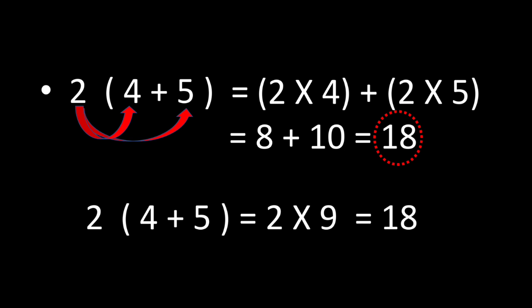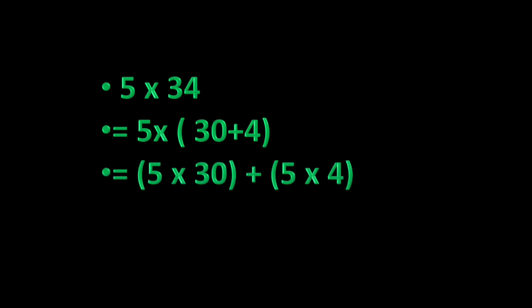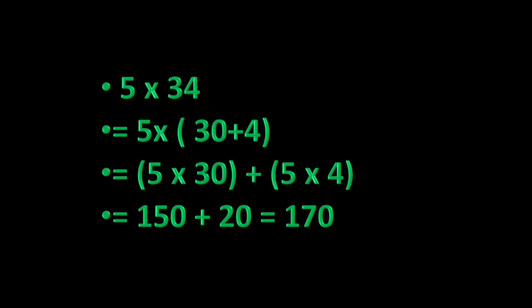This is distributive property. It is used to simplify calculations. For example, 5 times 34 — here 34 can be split to make it easier: 30 plus 4. So 5 is multiplied with each term inside the bracket — 5 multiplied by 30, and also by 4 — and both products are added together, giving 170. This is how distributive property is used to make calculations easier.